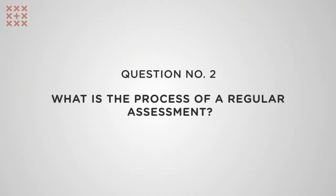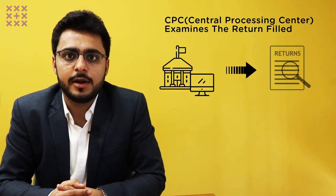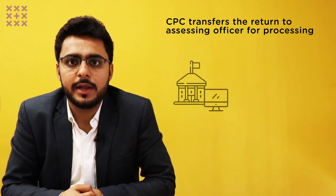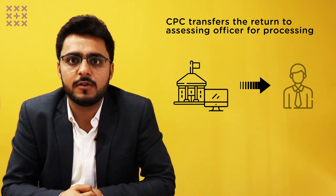When the taxpayer files the income tax return, it is firstly processed by the Centralized Processing Center (CPC), which is a computerized processing system of the Income Tax Department. It examines the income tax return using an integrated process based on certain criteria. When the department has a doubt about the income declared by the taxpayer or needs more clarification, it transfers the return to the Jurisdictional Assessing Officer for further processing.